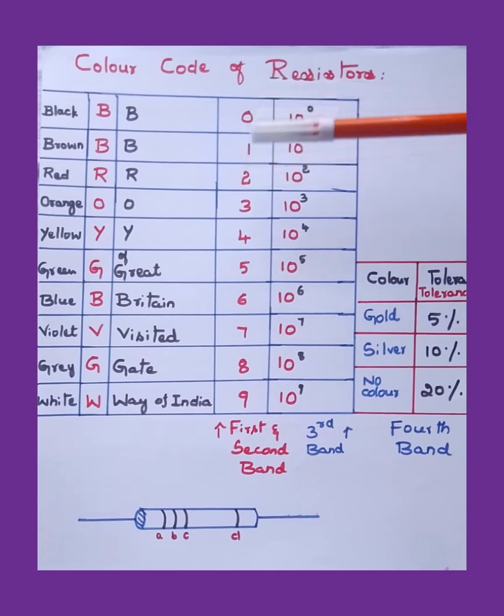You have to memorize this. In the exam, if the question is asked and if it is there in your mind, fine. Otherwise you can just write and check out these values. For tolerance value, colors given here: silver, gold, and without color. For gold, 5 percentage; silver, 10 percentage; for no color or without color, 20 percentage.